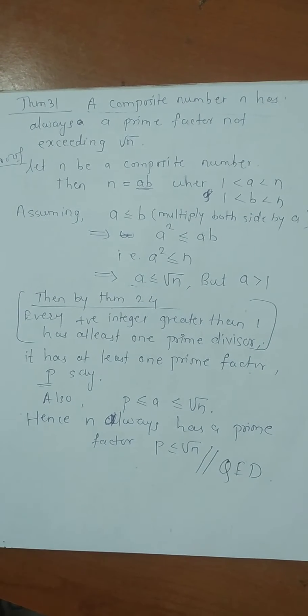Good morning everyone. Now let's see theorem number 31 on page 53. What is the statement of theorem? A composite number n has always a prime factor not exceeding root n. Yes. So let's see the proof.